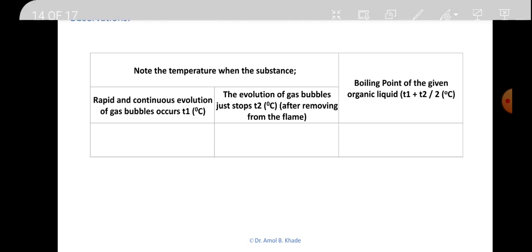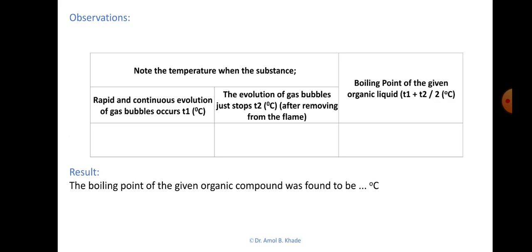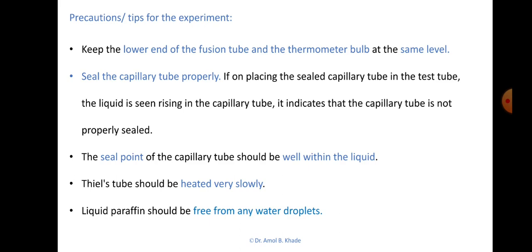Report your result as: the boiling point of the given organic compound was found to be [average temperature]°C. This is a very important and easy technique for identifying an unknown liquid substance. You can also distinguish between volatile and non-volatile samples by recording the boiling point. Like melting point determination, boiling point determination looks straightforward but must be done carefully to get accurate results.